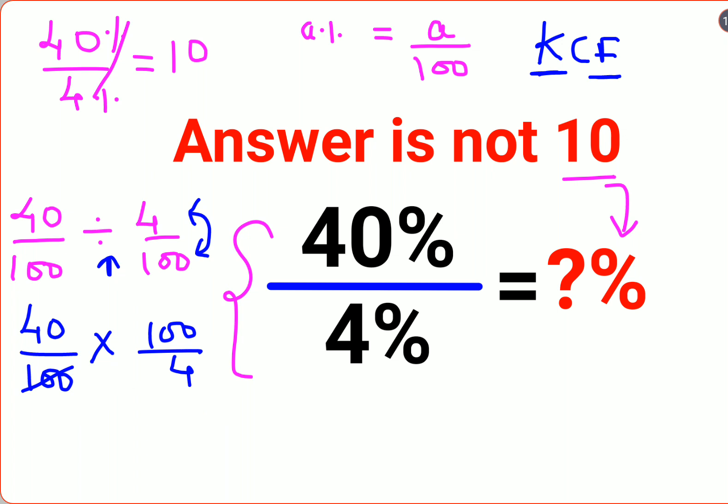Now if you see, the hundreds are cancelling and the answer comes out to be 10. But the question is asking for the entire answer to be represented in percent form. So if the answer is supposed to be represented in percent form, see when they had given us a percent, we divided by 100.